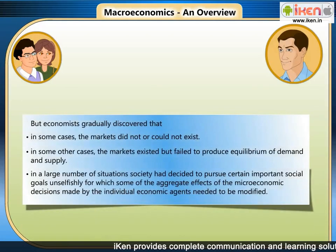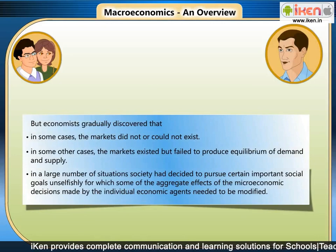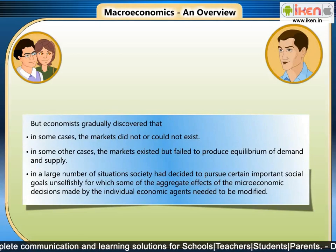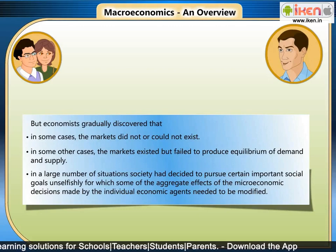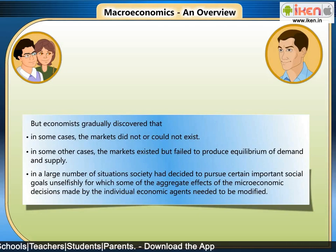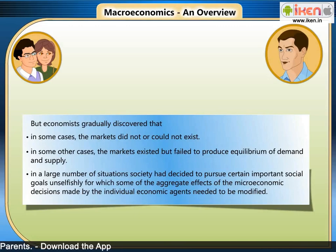But economists gradually discovered that in some cases the markets did not or could not exist. In some other cases, the markets existed but failed to produce equilibrium of demand and supply. In a large number of situations, society had decided to pursue certain important social goals unselfishly, for which some of the aggregate effects of the microeconomic decisions made by individual economic agents needed to be modified.